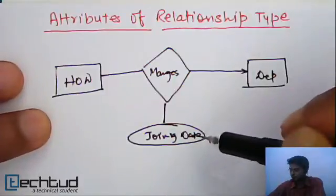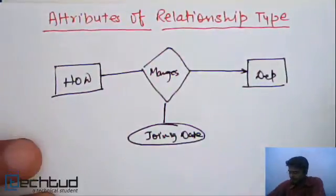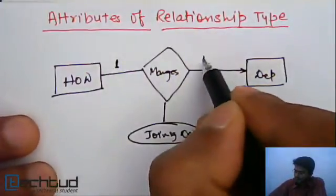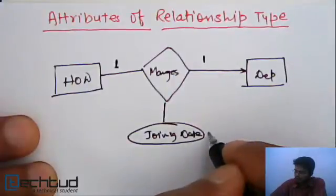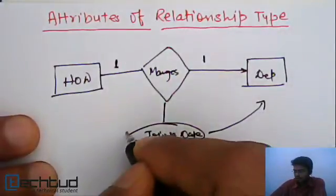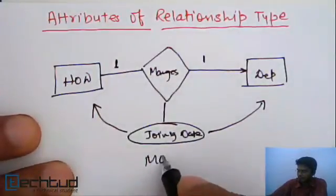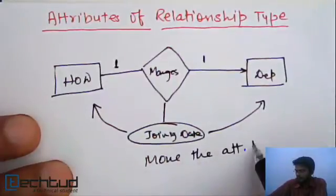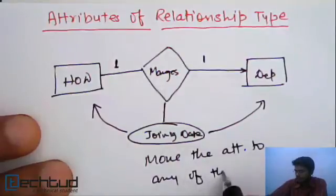So what do we do in our conceptual design when the relationship is one-to-one? We can move this joining date to any side — this side or this side. We can move the attribute to any of the entity types.